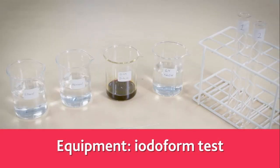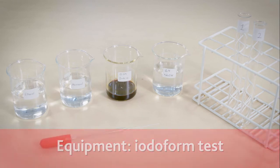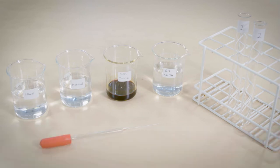The iodoform test can be used to identify the presence of a methyl alcohol group in alcohols. If this group is present, the precipitate triiodomethane is produced.